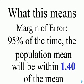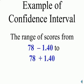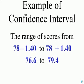In other words, 95% of the time, the population mean will be within 1.40 of the sample mean. Our confidence interval is simply the range of scores between a low of mean minus the margin of error to a high of mean plus margin of error. So here, it would be 78 minus 1.40 to 78 plus 1.40, giving us a confidence interval between 76.6 and 79.4.